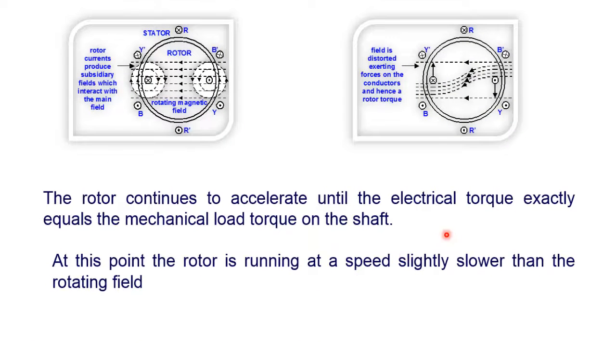The rotor continues to accelerate until the electrical torque exactly equals the mechanical load torque on the shaft. At this point the rotor is running at a speed slightly slower than the rotating field.